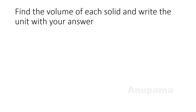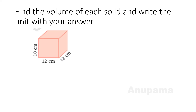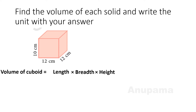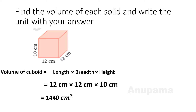Let us find the volume of a solid and write the unit with the answer. Here is a solid — its length is 12 centimeters, breadth is 12 centimeters, and height is 10 centimeters. Since it is a cuboid, volume equals length × breadth × height. Putting in the values: 12 × 12 × 10 = 1440 centimeter cube.